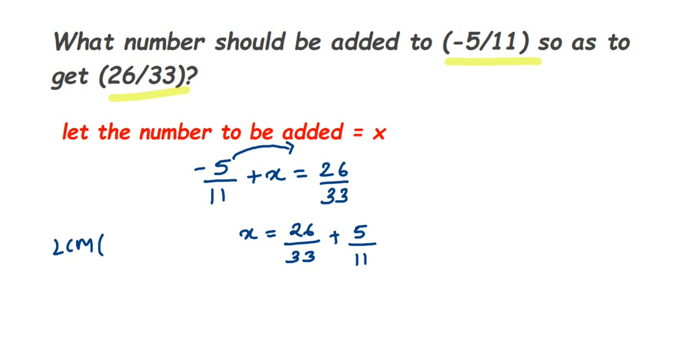So LCM of 33 and 11 will be 33. So x will be equal to - the first number is already 33, we don't have to do any changes. But for the second number there's 11, so we have to find out an equivalent rational number where the denominator will be 33.